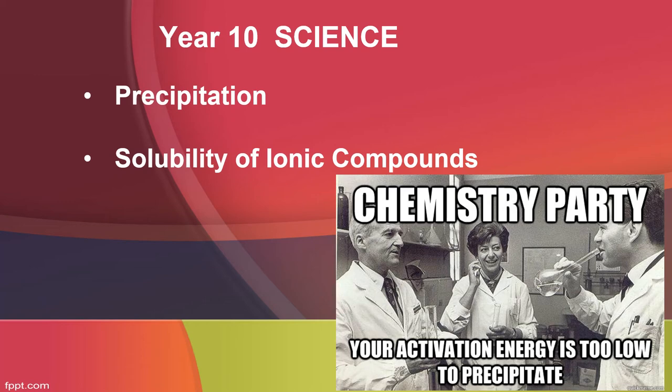On to the next lesson now, Year 10 Science — we're talking about chemistry. In particular, we're talking about how ionic compounds can react. Sometimes the product is soluble, meaning it will dissolve in a liquid, and sometimes it's insoluble. That's what we refer to as a precipitate.